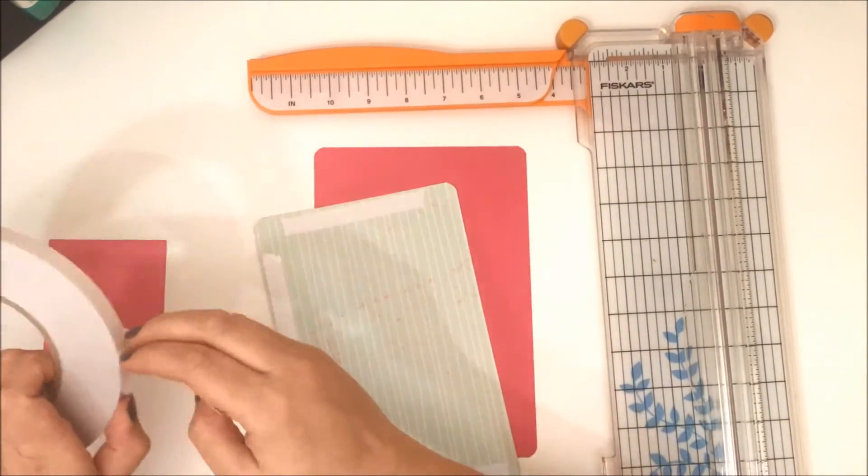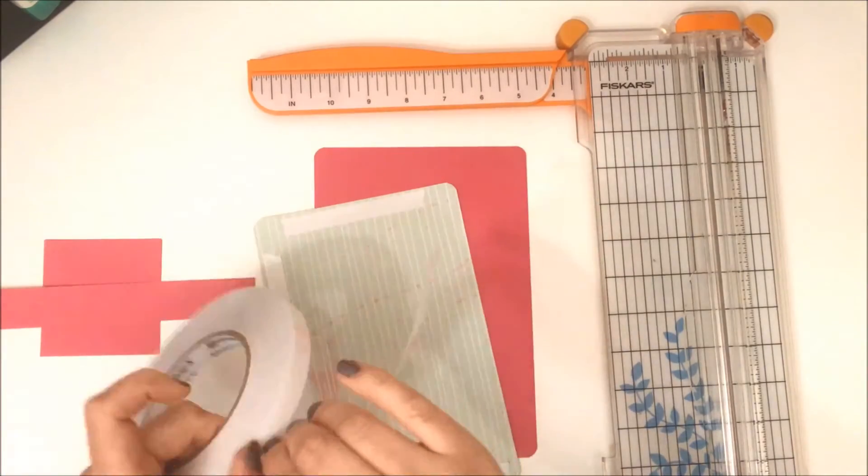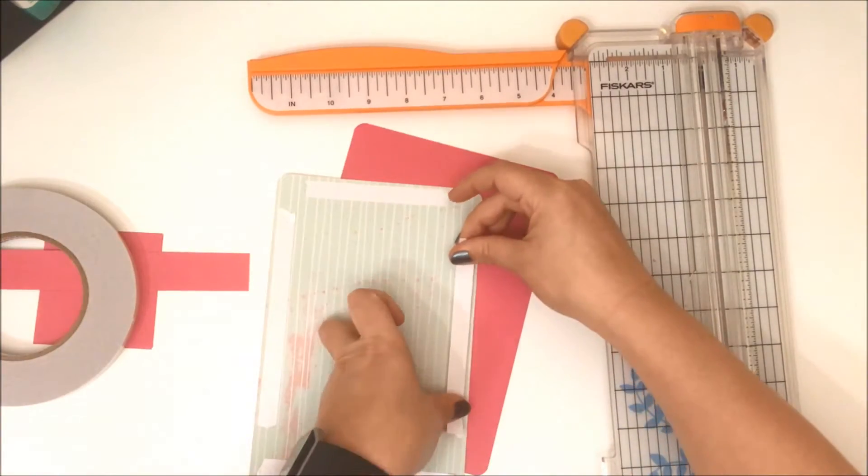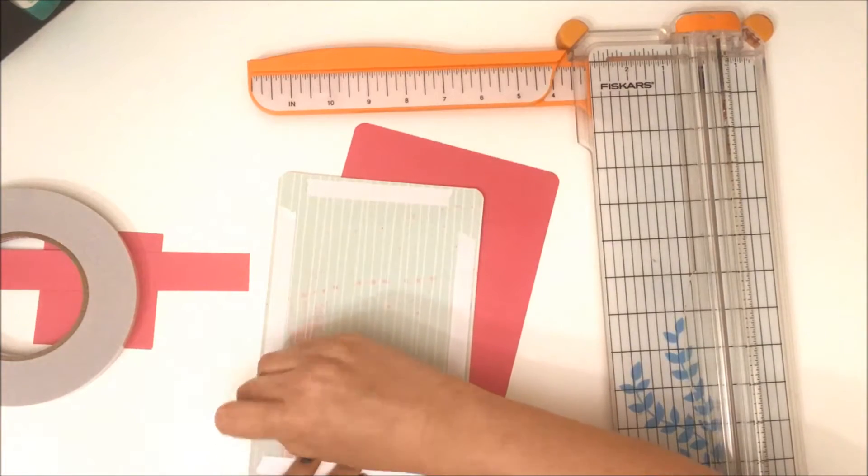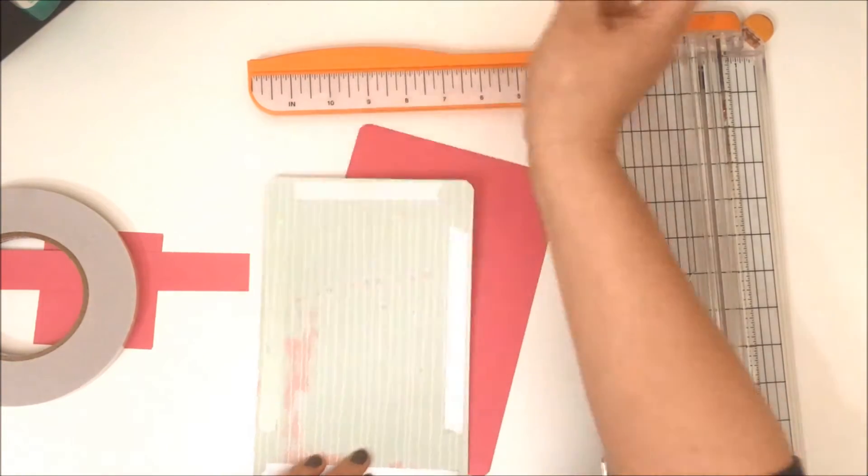I had a piece of patterned paper which measured eight and a quarter inches by five and a half inches, and again I rounded the corners. To start off with, I'm just placing the patterned paper on top of the pink paper.